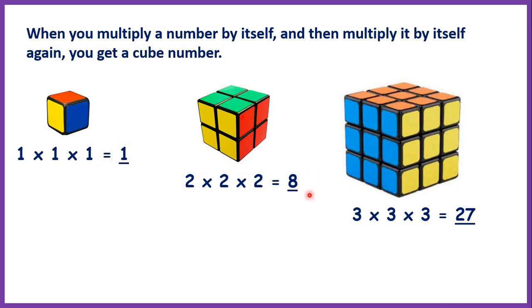So 1, 8, and 27 are our first three cube numbers, and the symbol for cubed is this little 3 which means multiply the number by itself three times.